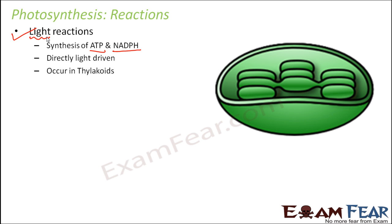Light reactions occur in the thylakoids. Why do they occur in the thylakoids? Because they are light driven, so light needs to be absorbed all the time for this reaction to take place. Who will absorb the light? The pigment which is present in the green part — that pigment is chlorophyll. The purpose of chlorophyll is to absorb light. Chlorophyll is present in the thylakoids, so the light will be absorbed in the thylakoids, and that is why light reaction will take place in thylakoids.